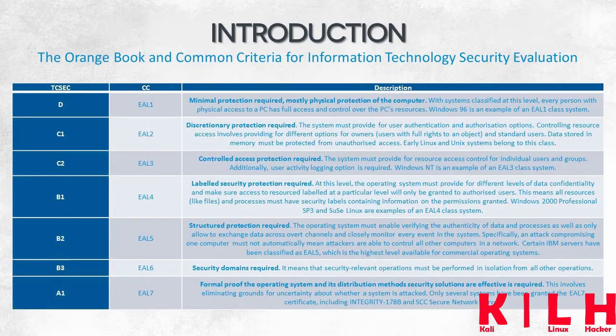To standardize the security provided by a computer system, a classification for evaluating security levels has been introduced. Initially, the assessment criteria of operating system security were published in a document called the Orange Book, part of a Rainbow Book series on computer system security. Several years later, the evaluation standard was updated and systematized. Today, the binding standards are the Common Criteria for Information Technology — the CC norm. The table above shows the relationships and corresponding security levels under the Orange Book and the Common Criteria standards.